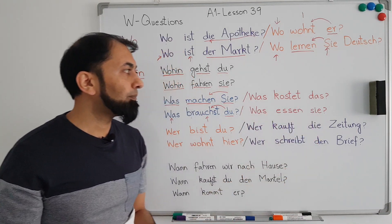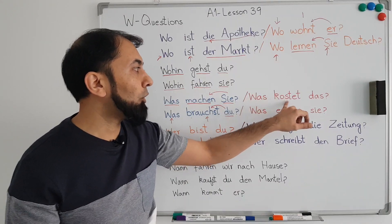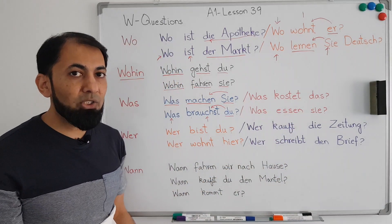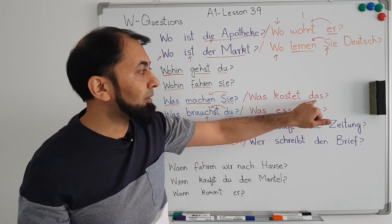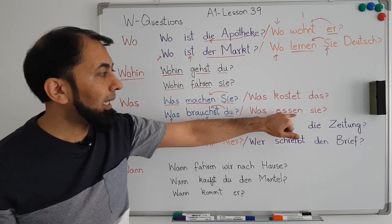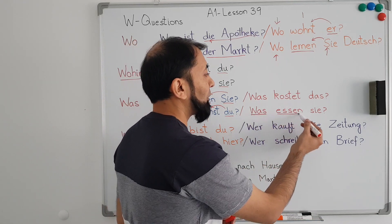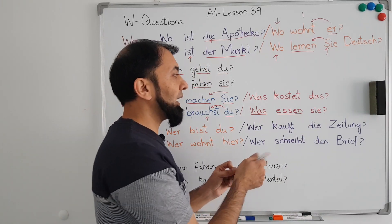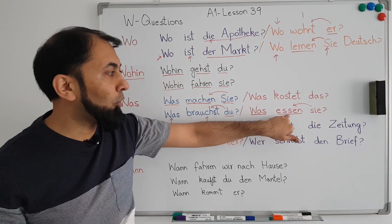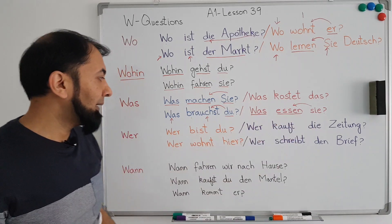Next: 'Was kostet das?' means 'What does it cost?' If you are in a market and do not know the price of something, you can use this question. Here 'kosten' is conjugated with respect to the third person singular, becoming 'kostet'. Next: 'Was essen sie?' means 'What are they eating?' Here 'essen' (to eat) is conjugated with respect to 'sie', meaning 'they', because the 's' is lowercase and the conjugation used is 'essen'.